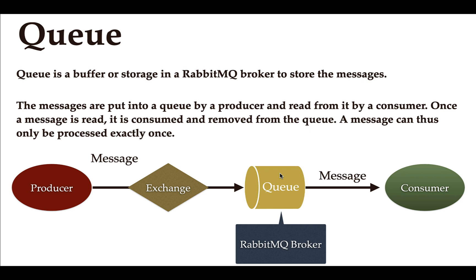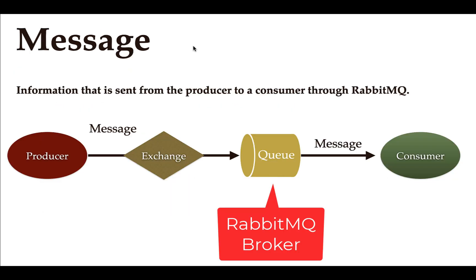Next, what is a message? A message is nothing but information that is sent from producer to consumer through RabbitMQ. A message can be any type — it can be a string, JSON, byte array, plain text, or HTML.